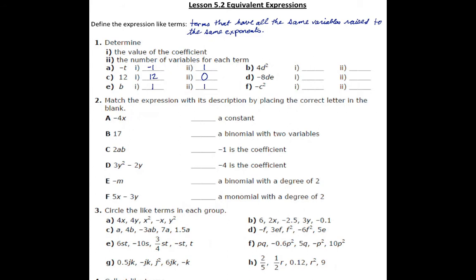Moving on to the next column, we're looking at 4d squared. With 4d squared, the coefficient is 4 and the number of variables is still 1. You might think that because it's d squared — d times d — there are two variables, but no, those are the same variable, so it's only 1. Next, we have negative 8de: the coefficient is negative 8 and there are two variables, d and e. Next, we have negative c squared: the coefficient is negative 1, and there is only one variable, which is c.